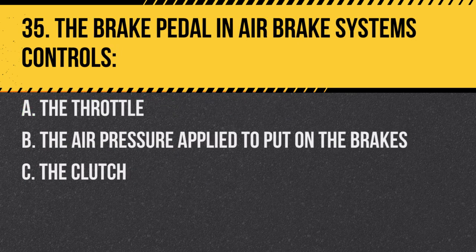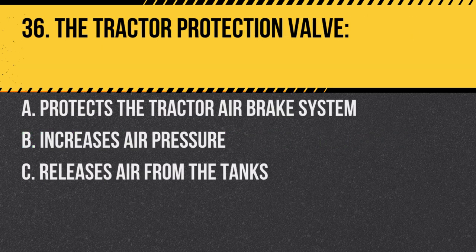Question 35. The brake pedal in air brake systems controls: A. The throttle. B. The air pressure applied to put on the brakes. C. The clutch. Answer B. The air pressure applied to put on the brakes. It determines the force of the brake application.